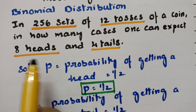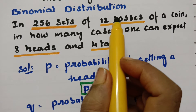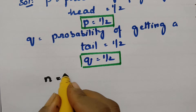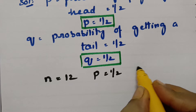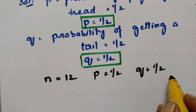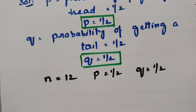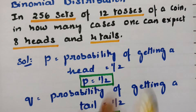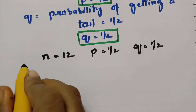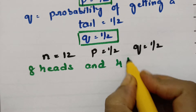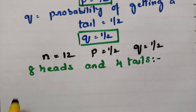So, in how many cases can one expect 8 heads and 4 tails out of 12 tosses of a coin? Here N is equal to 12, P is equal to half, and Q is equal to half. P is the probability of getting a head and Q is the probability of getting a tail. So we need 8 heads and 4 tails.